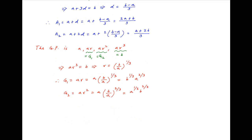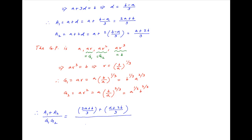Using these values of a1, a2, g1, and g2 in the required expression (a1 plus a2) divided by (g1 times g2), the numerator combines to give 2a plus b plus a plus 2b upon 3, and the denominator is b raised to the power 1 upon 3 times a raised to the power 2 upon 3, multiplied by a raised to the power 1 upon 3 times b raised to the power 2 upon 3.